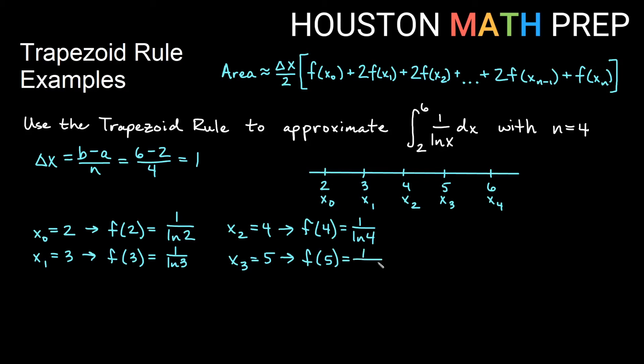x₃ here equals 5, so we will plug in and 1 over ln 5 will be our y value there. x₄ is equal to 6, so when we plug in that, we will get 1 over ln 6.